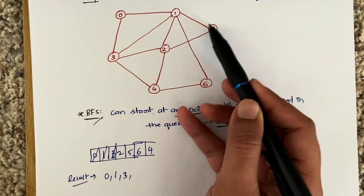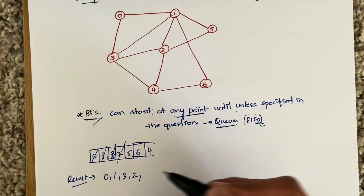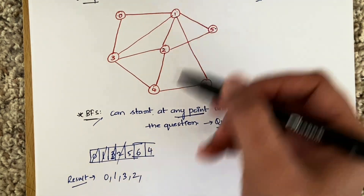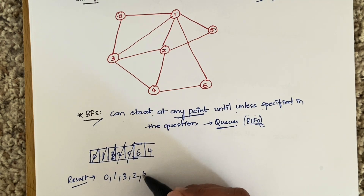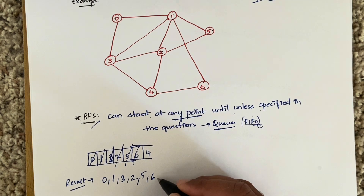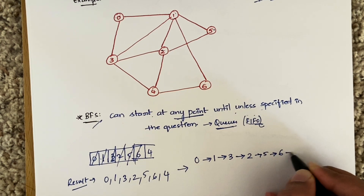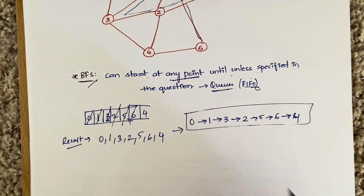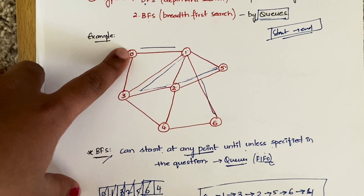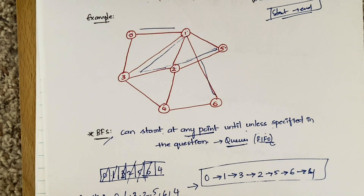From node two, you can go to five, one, three, and four — all already in the queue. Strike off two and write it in your result. From five, you can go to one and two — both already in the queue. Strike off five. Six is the same — already visited. Four: three, two, and six are all already visited. So four is done. Your BFS traversal order is: 0, 1, 3, 2, 5, 6, 4. Note that a different starting order among adjacent nodes gives a different valid BFS traversal.